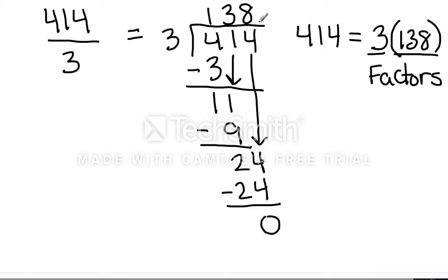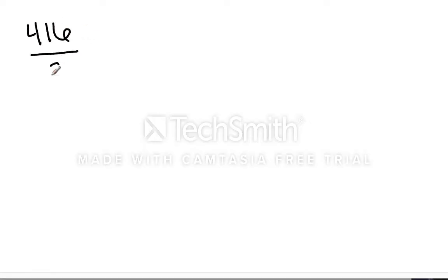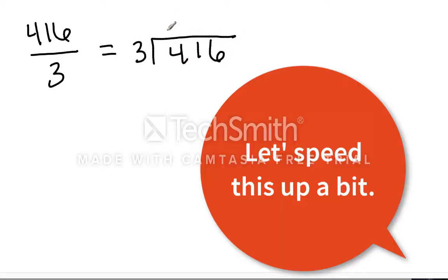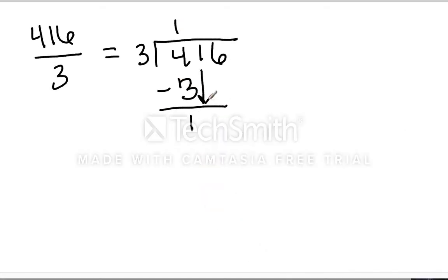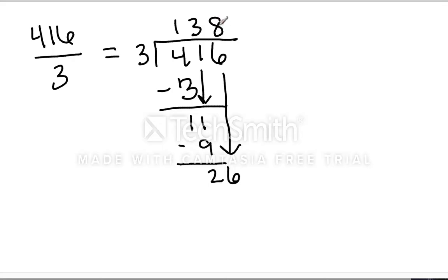Now let's see a division problem where we don't have a remainder of 0, but are left with something. Let's try dividing 416 by 3. We do this process all over again. 3 goes into 4 once. Subtract, bring down. 3 goes into 11, 3 times. Multiply, subtract, bring down. And now I have 26. 3 goes into 26, 8 times. 8 times 3 is 24.